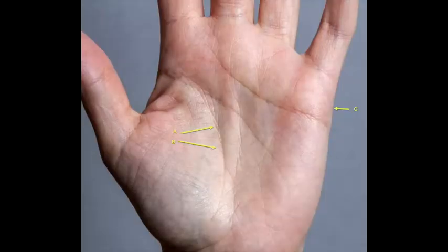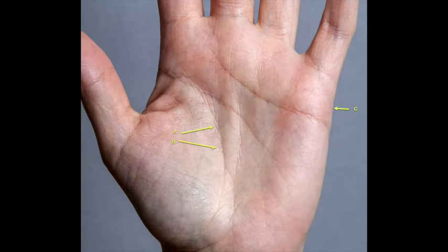Relationship lines also appear beside the lifeline. In this image, you can see three arrows. Arrow A shows the beginning of a new love relationship as a small line running beside the line of life.